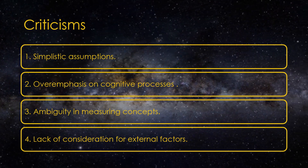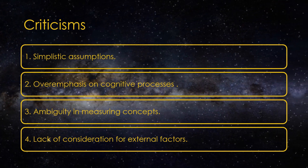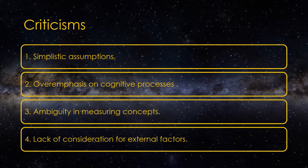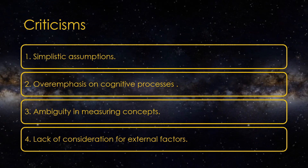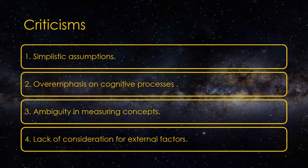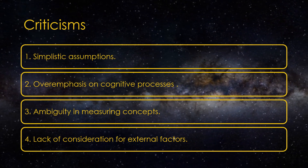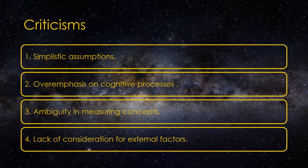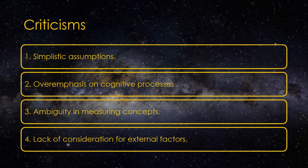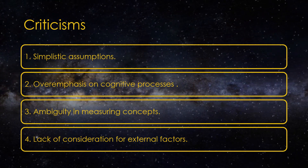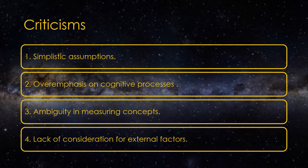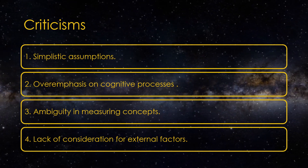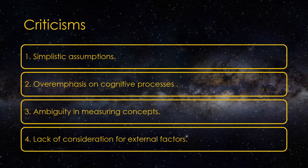The fourth criticism of expectancy theory is a lack of consideration for external factors, such as organizational culture or leadership styles, which can significantly impact motivation. For example, abusive supervision undermines employees' expectancy by creating a climate of fear and distrust, regardless of the attractiveness of the goals or rewards.